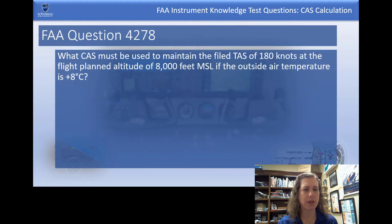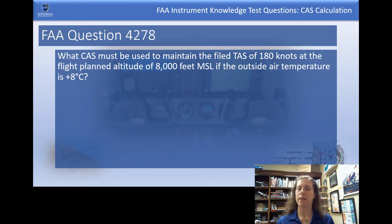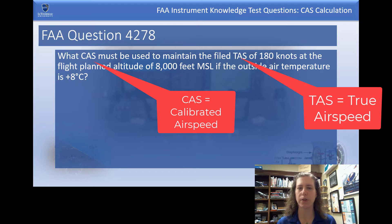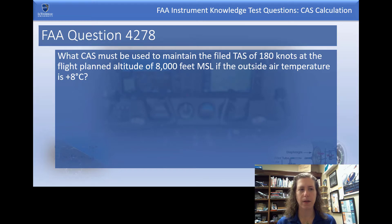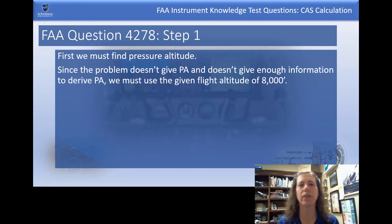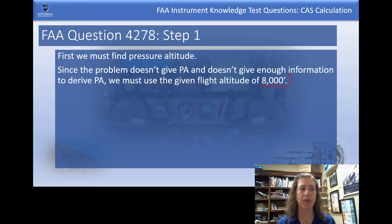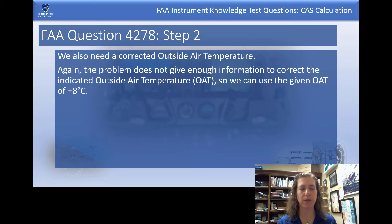Here's one of the example FAA questions. It asks for the calibrated airspeed needed to maintain a filed true airspeed of 180 knots. It gives us a planned altitude — the questions don't specifically say pressure altitude, we just have to infer that. So we'll take the given flight altitude of 8,000 feet and assume that is the pressure altitude. Similarly, we need a temperature, and the question gives us 8 degrees Celsius.